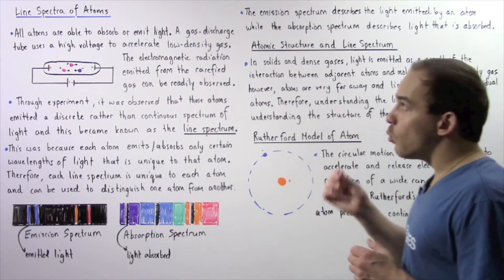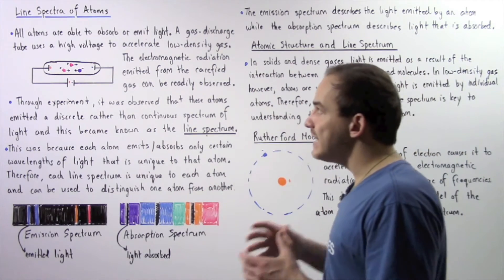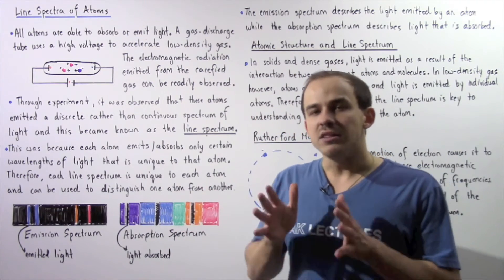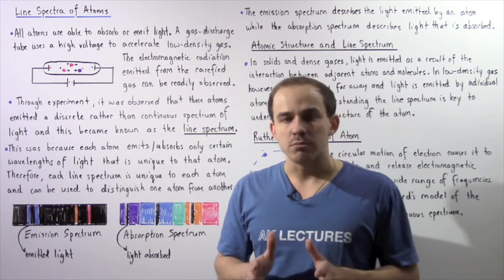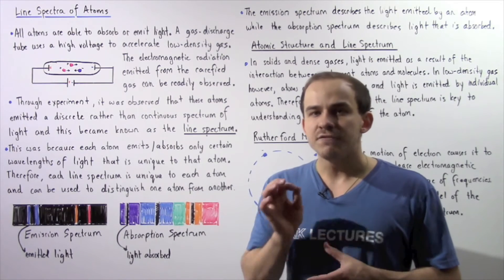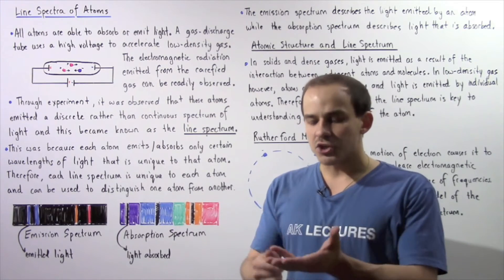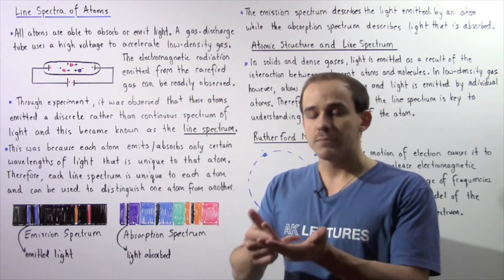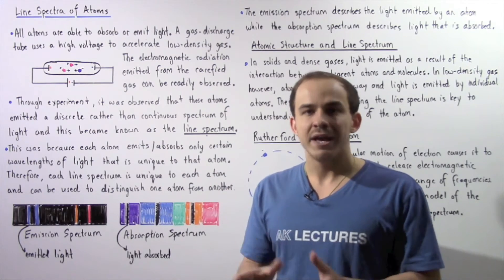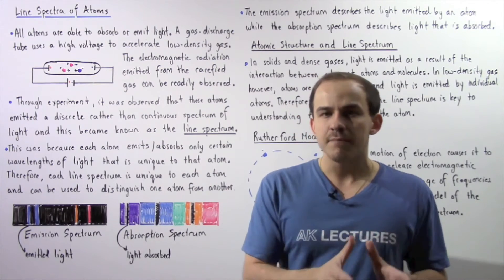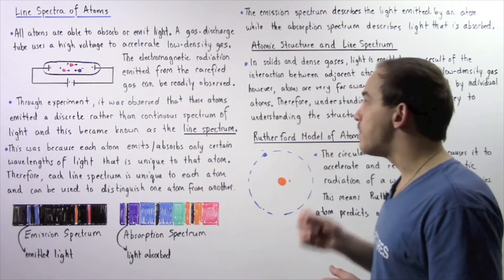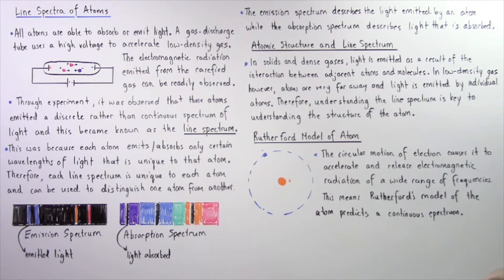A line spectrum of an atom tells us the wavelengths of light that are either emitted or absorbed by that particular atom, and each atom has its own unique line spectrum of wavelengths.